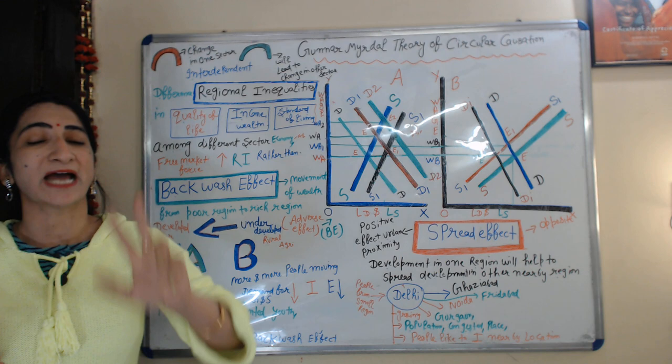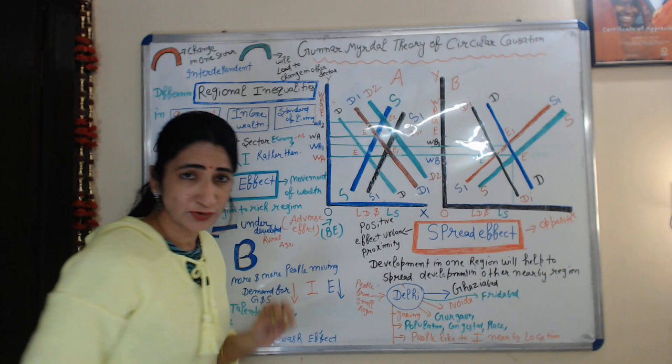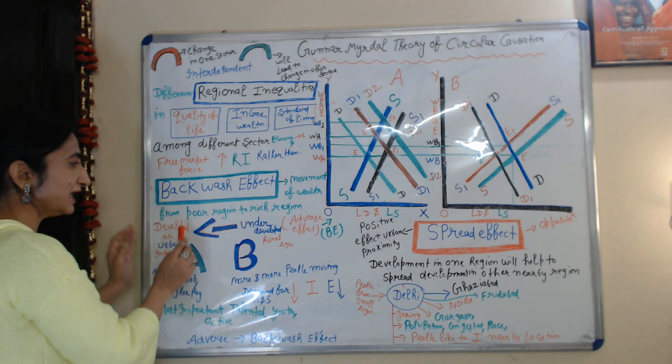To explain the whole concept of his theory, Myrdal basically talks about two types of effects: one is the backwash effect, and the other one is the spread effect. First of all, I will talk about the backwash effect.